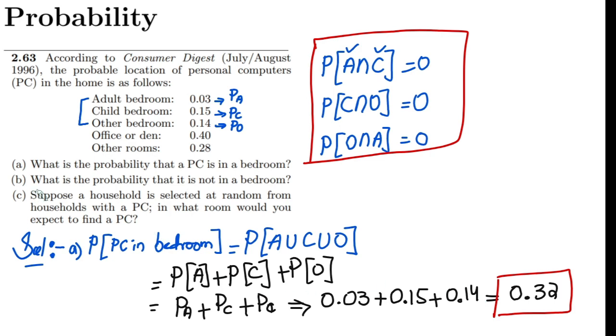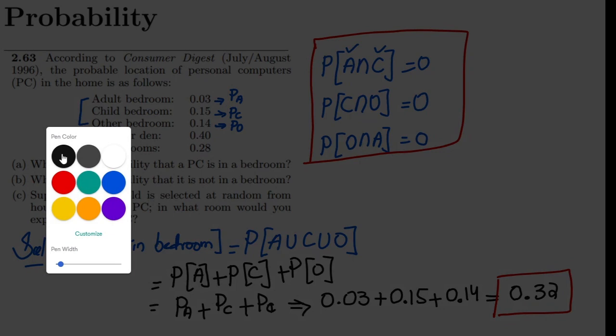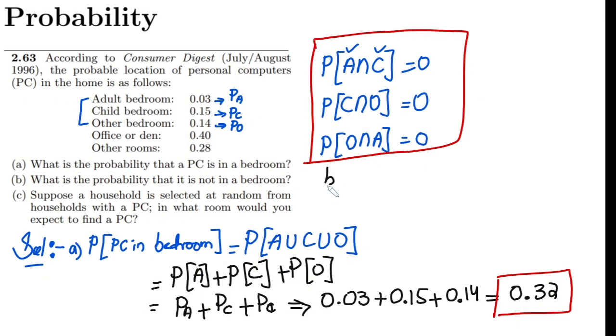Similarly, what is the probability that it is not in a bedroom? So how to find it out? Let me write here. This is part (b). The probability that PC not in the bedroom. We have this formula: 1 minus probability that PC is in bedroom.